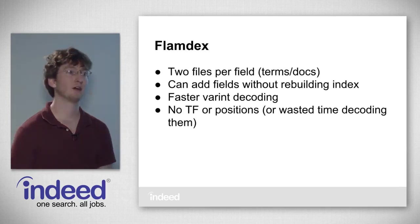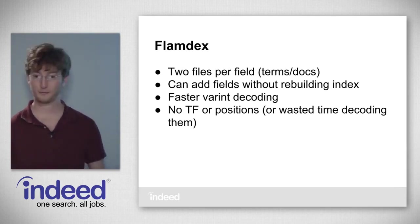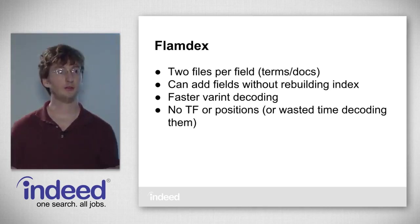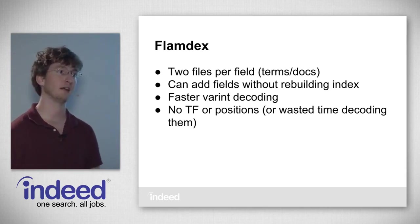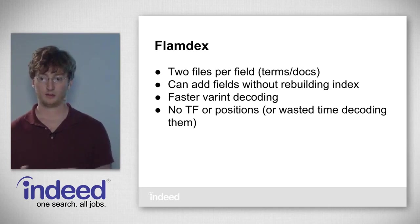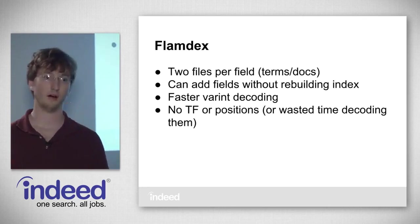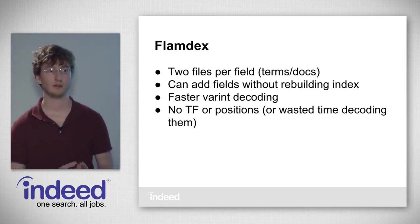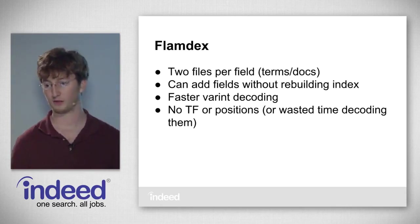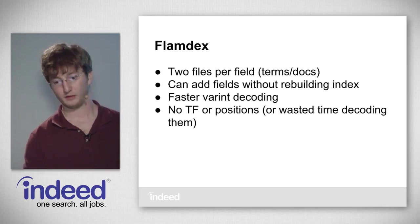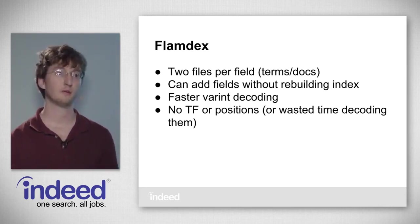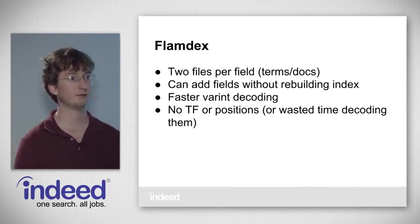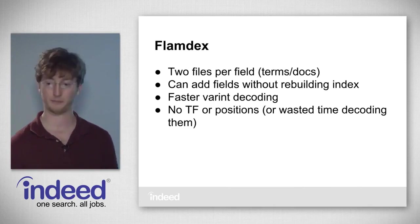We have our own inverted index format called Flamdex. In Flamdex, we have two files per field — a terms file and a docs file. This is useful because we can add fields to our index without rebuilding the entire index, whereas in Lucene all fields are in the same file. Flamdex has its own varint decoder implementation that is faster than what's currently available in Lucene. We've also omitted term frequencies and positions, which you normally want for serving search queries but which we don't need for analytics, so we drop them to avoid wasting decode time.